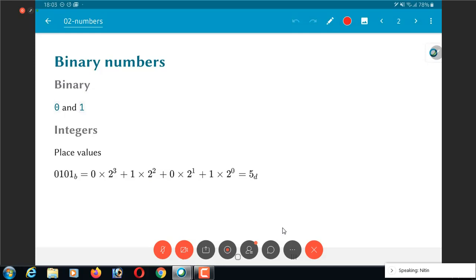For representing arbitrary integers, we use the place value system of numbers. For example, a number like 0101 corresponds to 0 times 2^3, 1 times 2^2, 0 times 2^1, 1 times 2^0, which equals 5 in decimal.